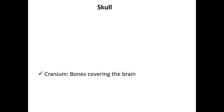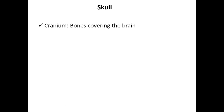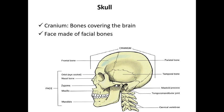First, we will look at the skull. The skull consists of two parts: one is the cranium — the part that covers the brain — and the other is the face, which is made up of facial bones. Looking at this picture, you can see the cranium, which contains the bones that cover the brain, and the face made up of facial bones.